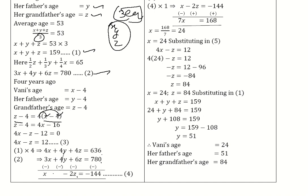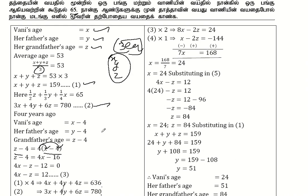Equation 3 does not contain y. We multiply equation 3 by 2: 8x minus 2z equals 24. Subtracting equation 4 (x minus 2z equals minus 144), with sign change, the 2z terms cancel. We get 7x equals 24 plus 144, which is 168. So 7x equals 168, and dividing by 7, x equals 24.